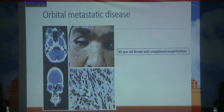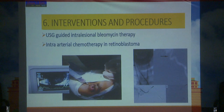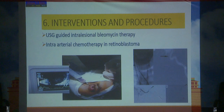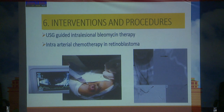Imaging can also detect orbital metastasis presenting with unexplained enophthalmos. Few interventional procedures are also done under ultrasound guidance, such as intralesional bleomycin therapy. Intra-arterial chemotherapy for retinoblastoma is done with direct ophthalmic artery catheterization.